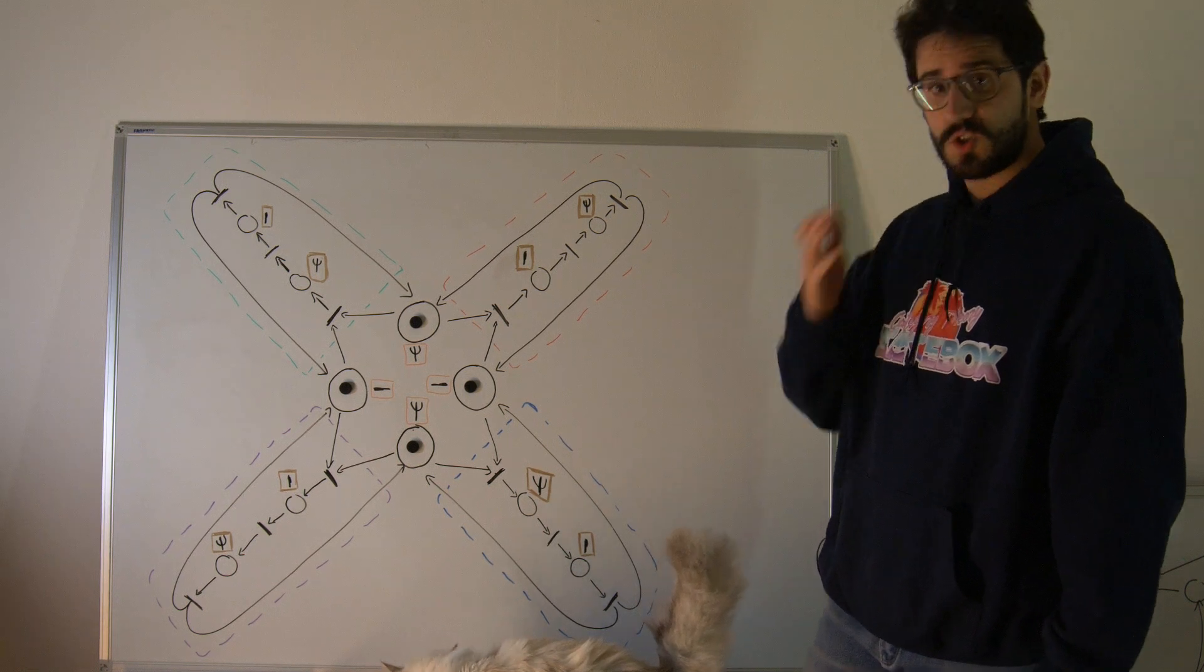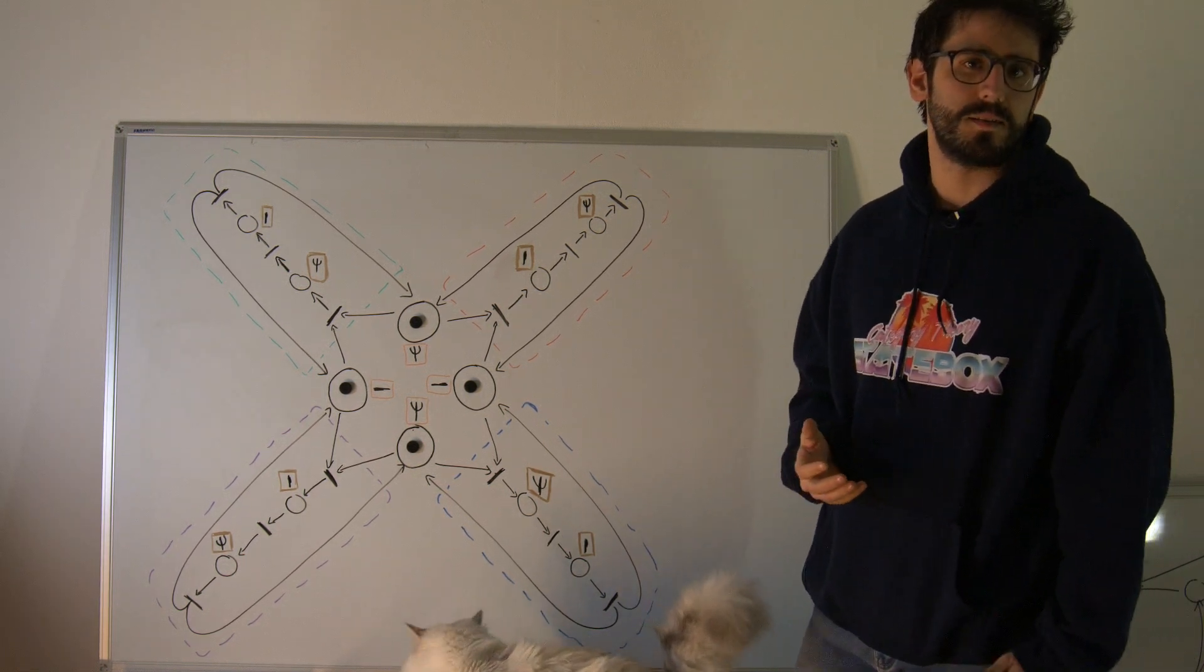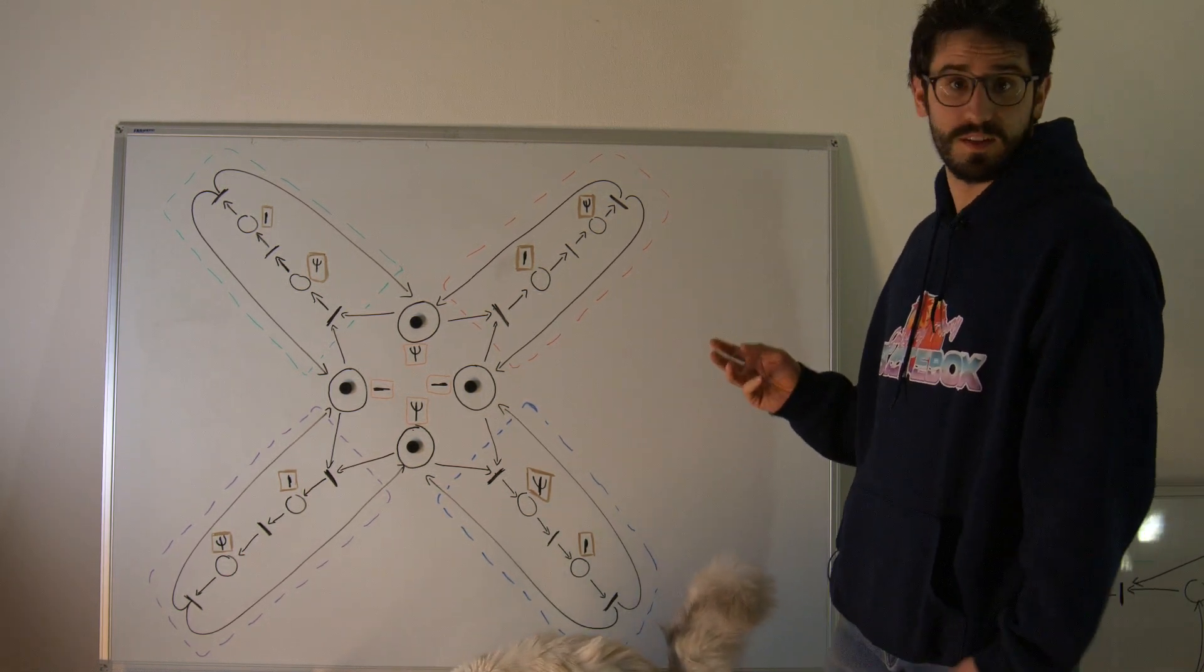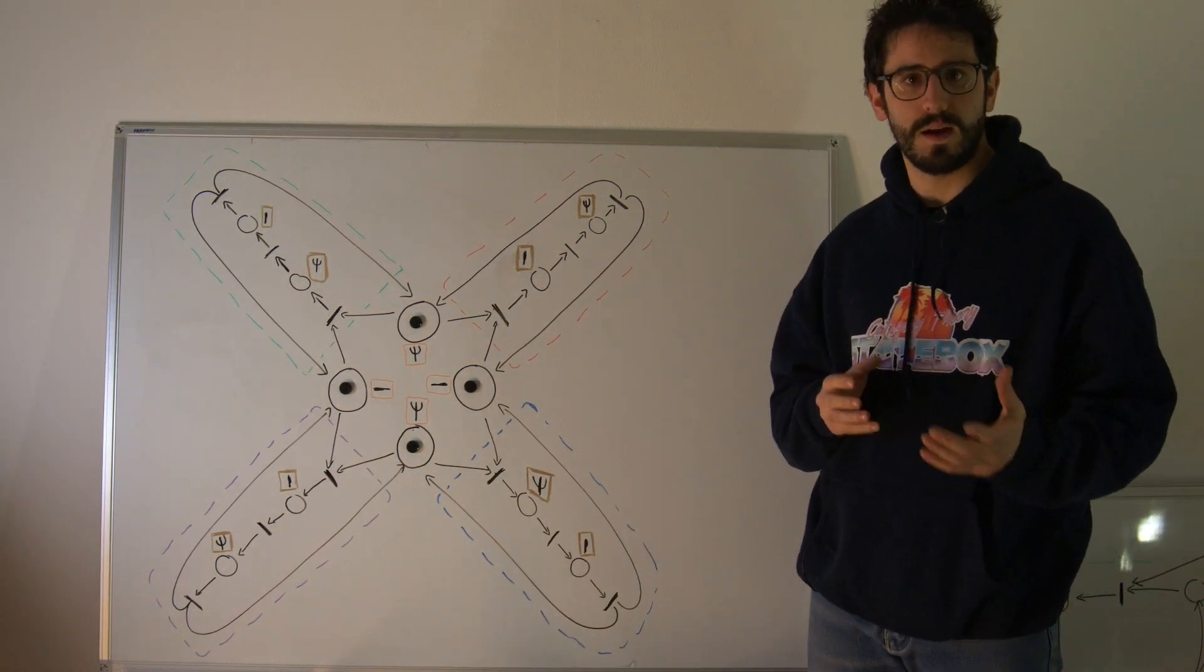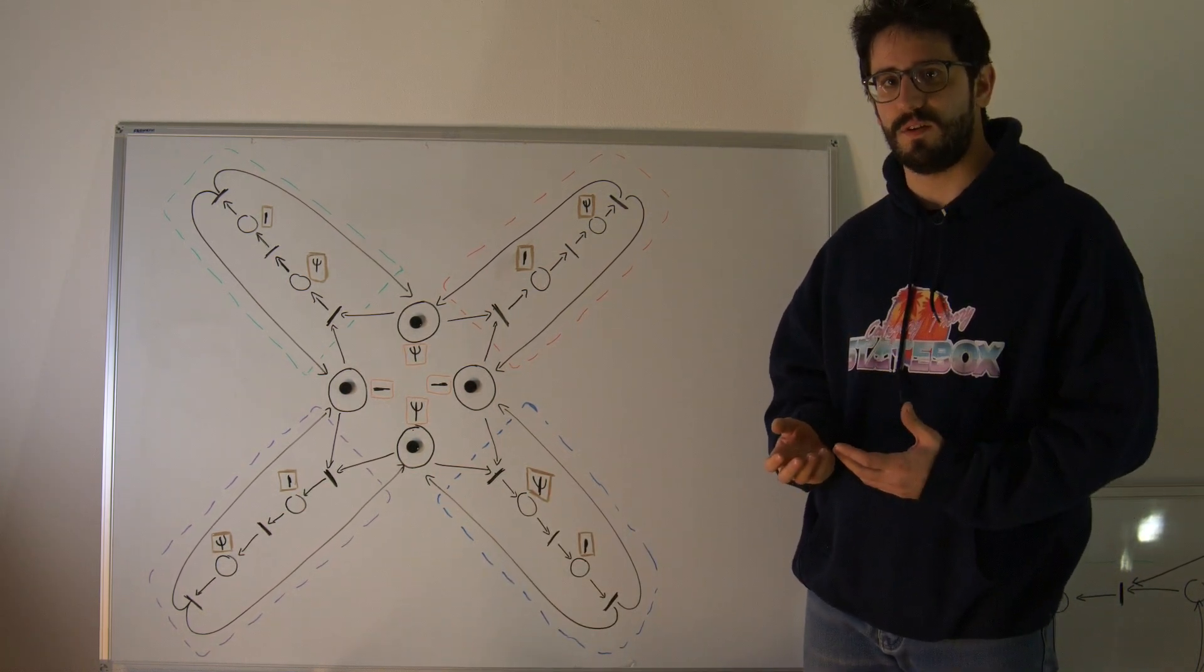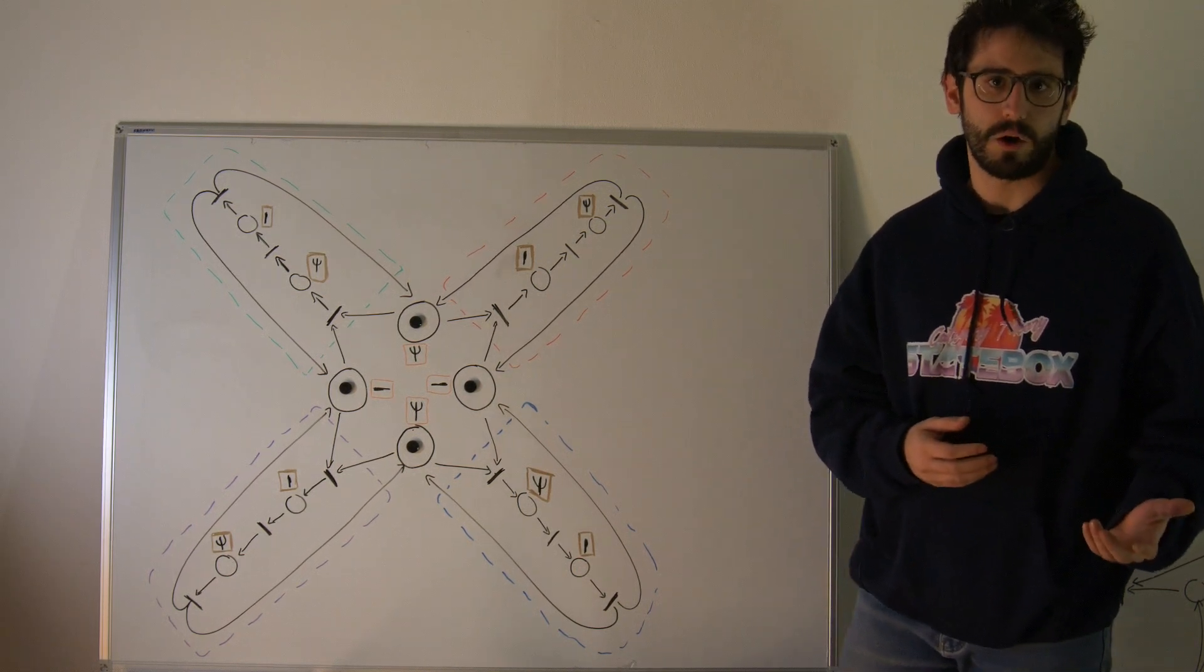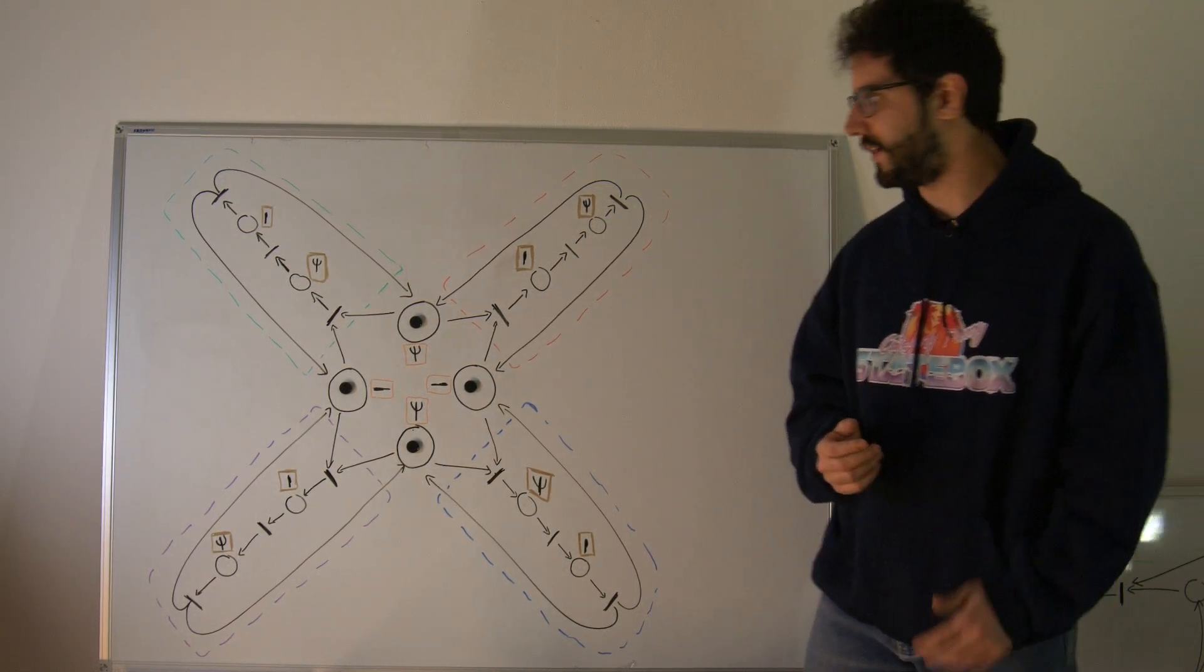In the last video I showed you how to use Petri nets to obtain a model of the dining philosophers problem that was faithfully representing its behavior, including the deadlocked behavior, which is undesired.